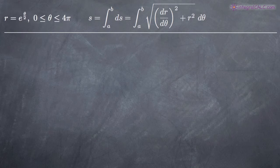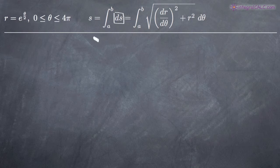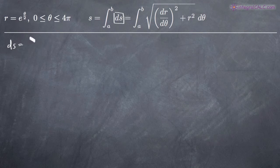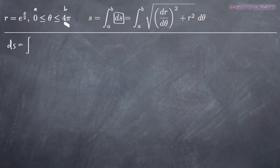So in order to find arc length, we're going to use this formula over here for ds, which will give us arc length. So let's go ahead and start writing our formula. To find arc length ds, we're going to take the integral on the range a to b. A and b are defined by the range here — zero and four pi — so we're going to be evaluating from zero to four pi.